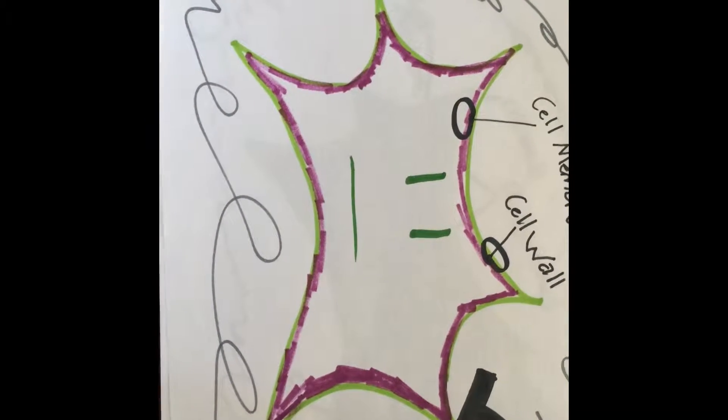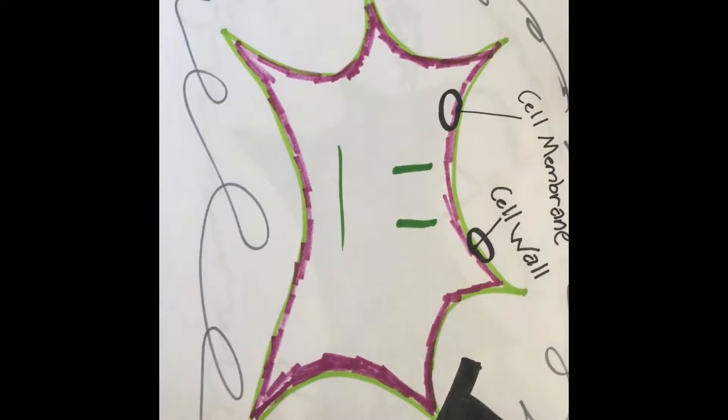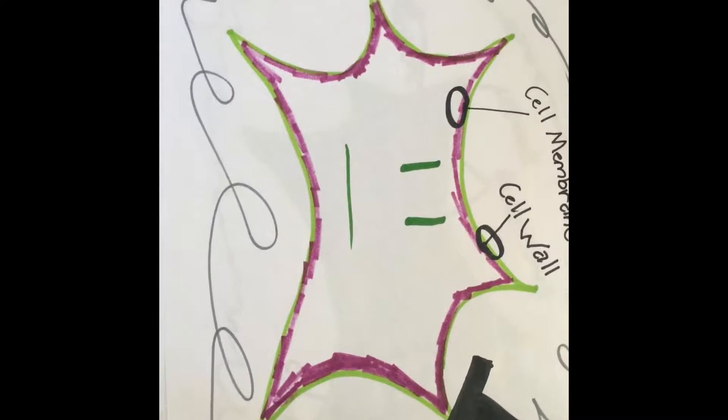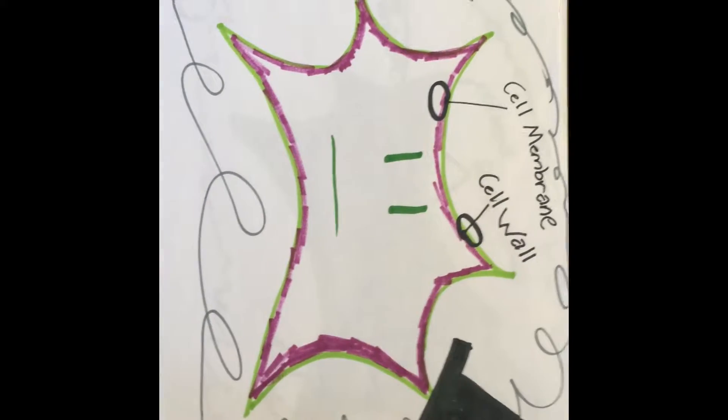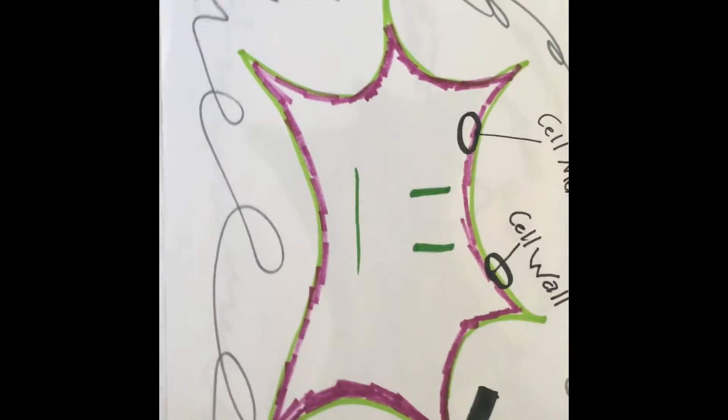He thought about all of the poor cell membranes in the cell walls, the cell walls that protect and maintain the shape of all of his cells, and the cell membranes that control the molecules passing in and out of all of his many cells.